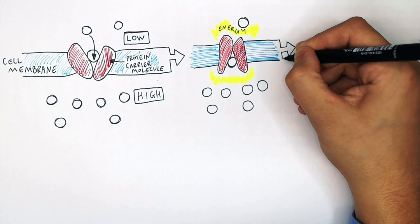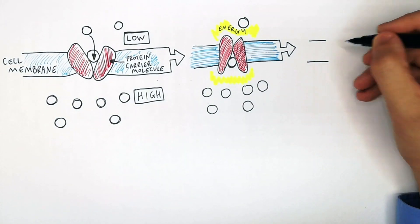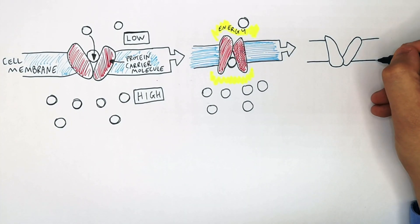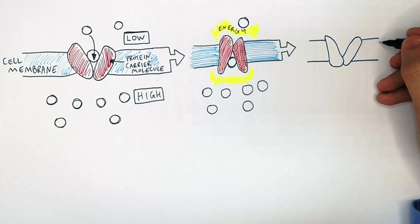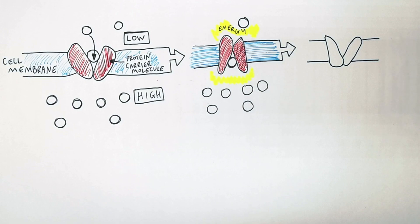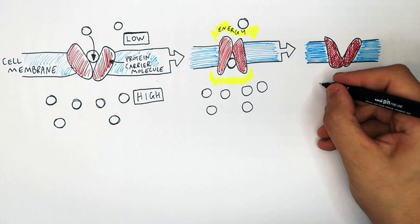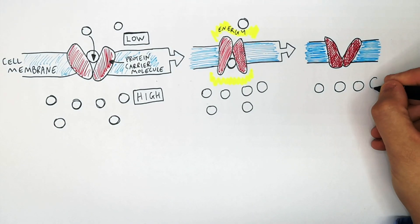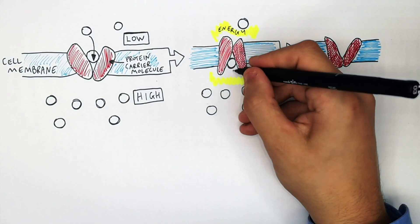When energy is not being used, the protein carrier molecule returns to its normal shape. It requires energy to transport the molecule from a low to high concentration. Before there were six molecules inside the cell; now there are seven.